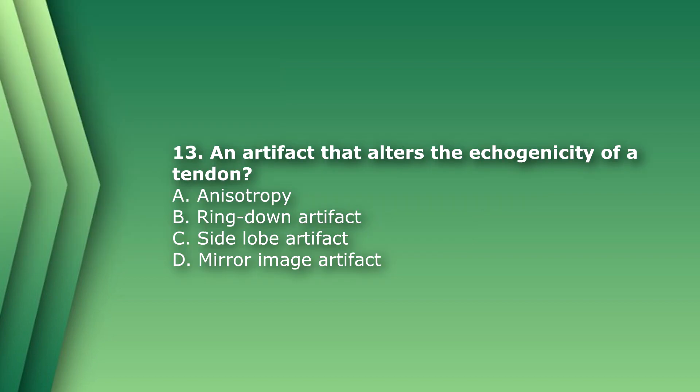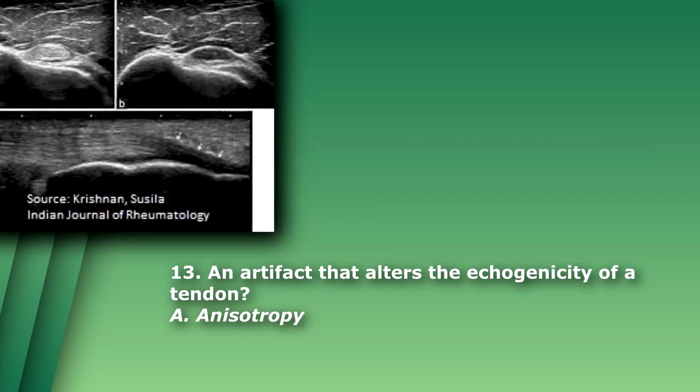Question 13: An artifact that alters the echogenicity of a tendon is: A) anisotropy, B) ring down artifact, C) side lobe artifact, or D) mirror image artifact. The answer is A) anisotropy. A perpendicular angle gives you a normal hyperechoic tendon. If you angle obliquely to a tendon, the tendon will appear hypoechoic.